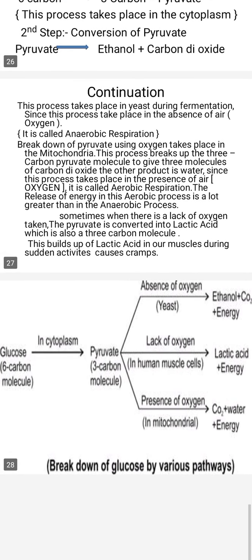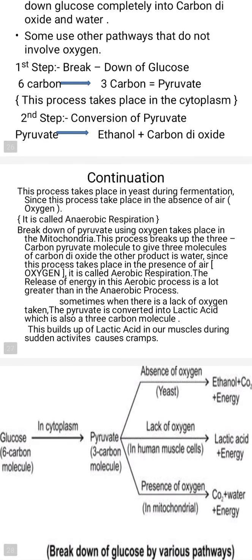Here we see a flowchart showing the breakdown of glucose. Six-carbon glucose in the cytoplasm gives rise to three-carbon pyruvate. In the absence of oxygen in yeast, this gives rise to ethanol plus carbon dioxide plus energy. In the lack of oxygen in human muscles, it gives rise to lactic acid plus energy. In the presence of oxygen in mitochondria, it gives carbon dioxide plus water plus energy.